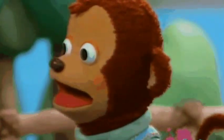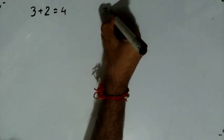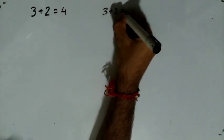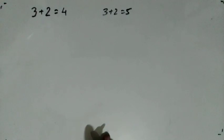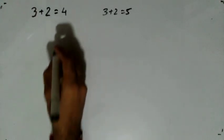It is not logically possible because 3 plus 2 is equal to 5. In this video, I will make a minor mistake and you have to spot out that mistake and comment in the comment section. 3 plus 2 is equal to 4 — I will prove this to you, I will show you.